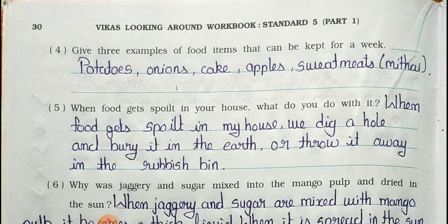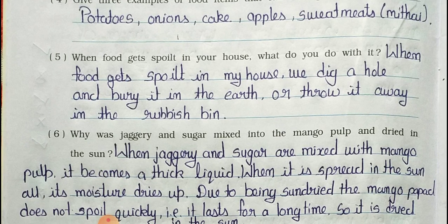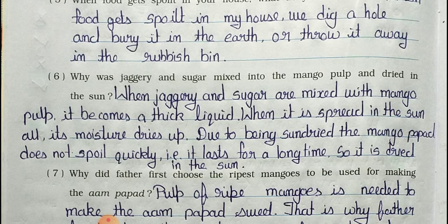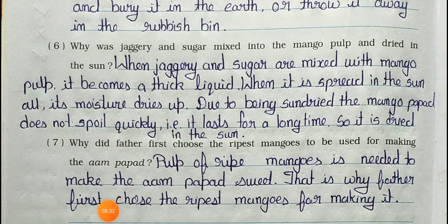Question 5: When food gets spoiled in your house, what do you do with it? Answer: When food gets spoiled in my house, we dig a hole and bury it in the earth, or throw it away in the rubbish bin.